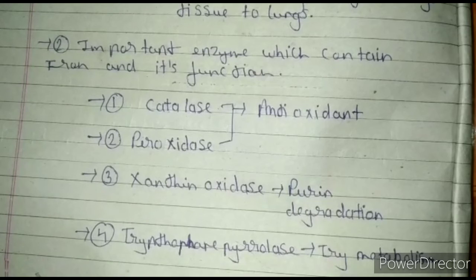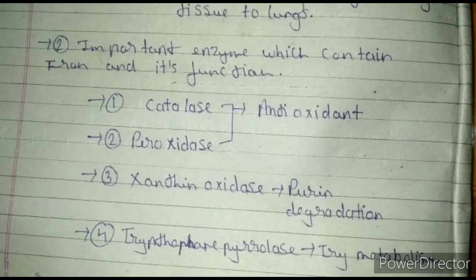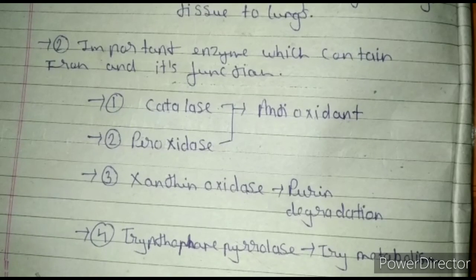Xanthine oxidase is also an enzyme which contains iron and helps in purine degradation. Tryptophan pyrolase is also an enzyme which contains iron and helps in tryptophan metabolism.